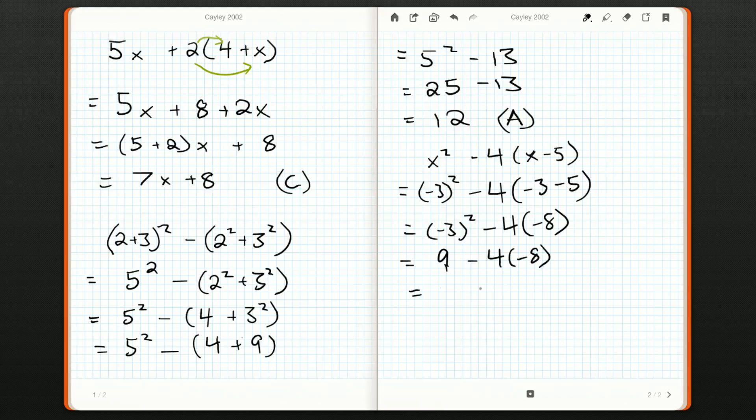So now what do we have? Well, we have no more exponents. Now it's time for multiplication and division. Here's a multiplication. It's the only one. So four times negative eight, that's negative 32. And we're left with one expression, nine minus negative 32. We could rearrange that and say the negatives will cancel out. It just becomes nine plus 32. And nine plus 32 is an answer of 41.